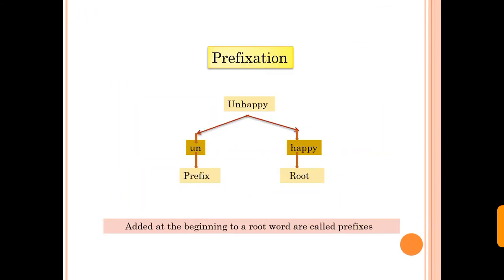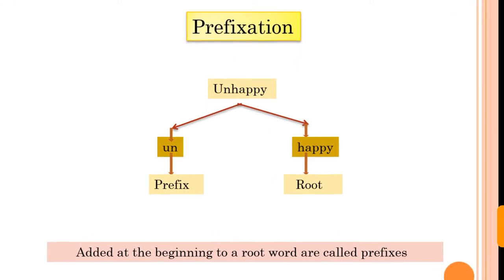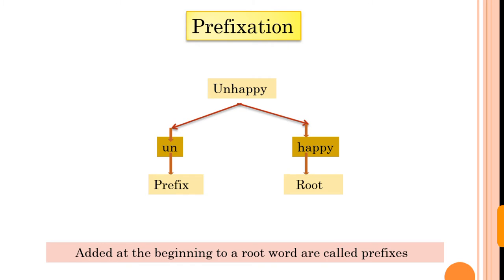The first process of affixation is prefixation. Here I explain with example. Happy, we add un, it became unhappy. So happy is the root and un is the prefix. The prefixation which added at the beginning of the root word is called prefix.